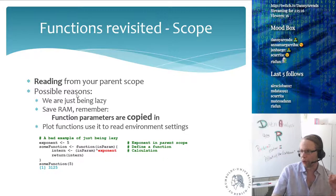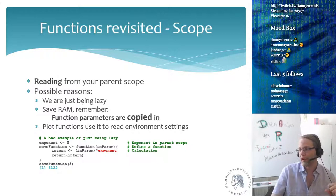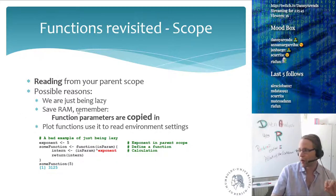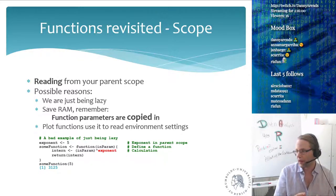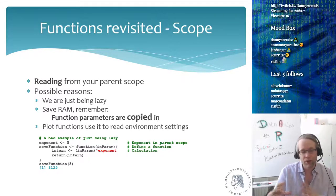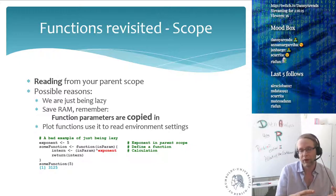One reason we might do this is laziness — we don't want to define another input parameter, so we just read variables available outside. Being lazy is not a good excuse. However, in R we sometimes want to save RAM: imagine a variable containing a billion measurements. In R, function parameters are often copied in, so by calling a function we duplicate the memory. Instead of using two gigabytes, the algorithm suddenly starts using five gigabytes.